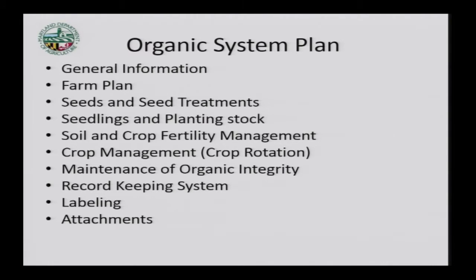The organic system plan, or OSP, is what we call your application or update after you're certified, but most of the organic community calls it an OSP. The sections include general information, the farm plan, seeds and seed treatments, seedlings and planting stock, soil and crop fertility, crop management, maintenance of organic integrity, property, record keeping, labels and attachments.